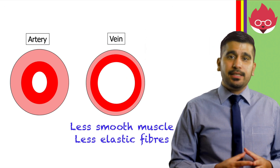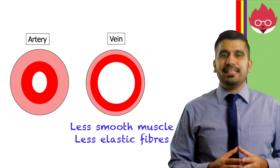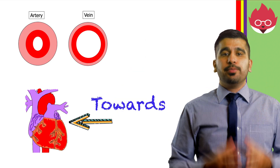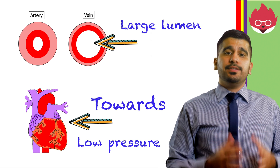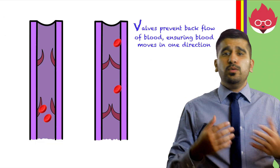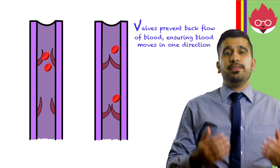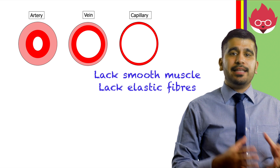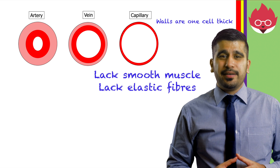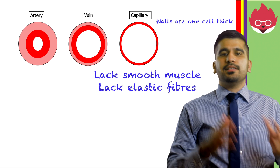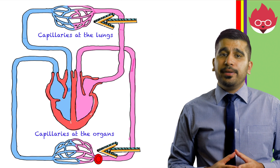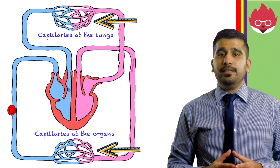Looking at veins, their walls are less muscular and contain less elastic fibres, which is not needed as they carry blood back towards the heart at low pressure. Their lumen is also larger than those of the arteries. As blood is moving at low pressure against gravity, veins also have valves that prevent the backflow of blood. Finally, capillaries have no muscle or elastic fibres and their walls are only one cell thick. They are permeable so that substances are able to transfer between the blood and cells, and their primary role is to carry blood through organs, bringing blood close to every cell.